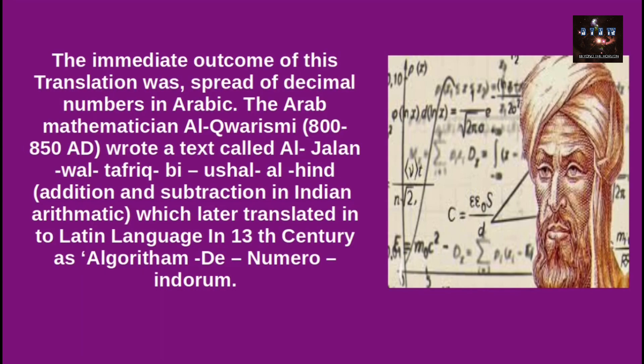These decimal numbers were actually invented in India by Indian astronomers but were carried to Arab countries later. The Arab mathematician Al-Khwarizmi, whose period was 800–850 AD, wrote a text called Al-Jama' wal-Tafriq bi Hisab al-Hind, meaning 'addition and subtraction in Indian arithmetic,' which was later translated into Latin in the 13th century as Algoritmi de Numero Indorum.